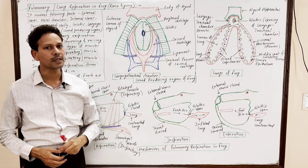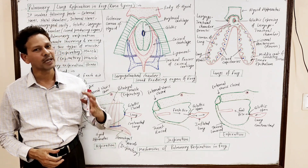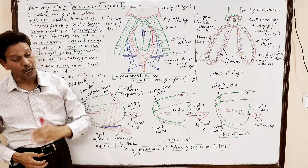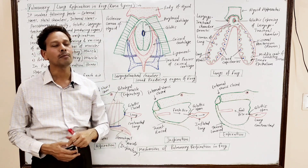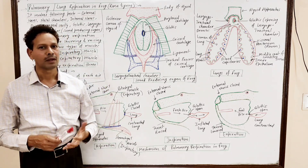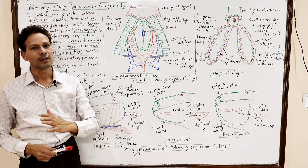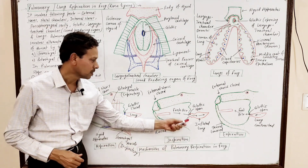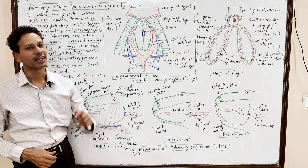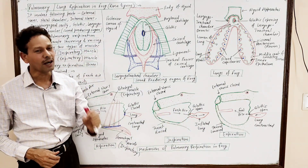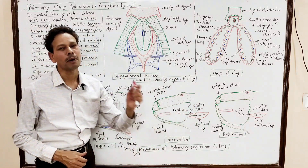Dear students, in today's lecture we will discuss pulmonary respiration in frog — that is, respiration through lungs. As we know, in the case of frog there are three modes of respiration: cutaneous respiration via skin, second is via the lining of the buccal-pharyngeal cavity, and in today's lecture we will discuss the third mode, that is lung respiration. It is pulmonary respiration.